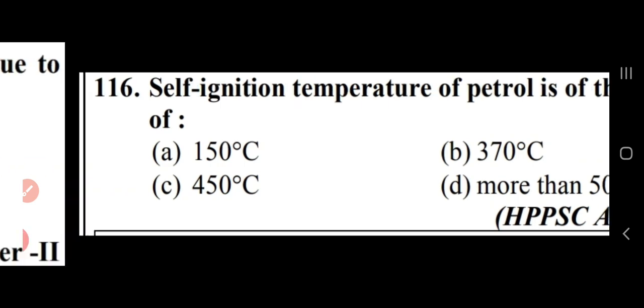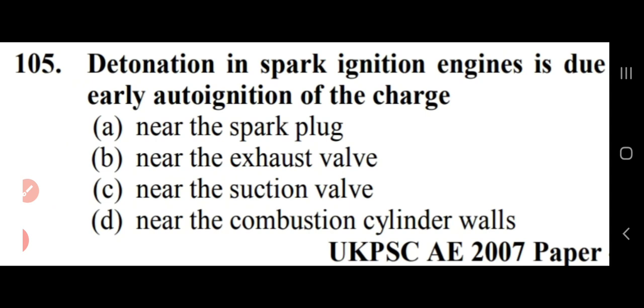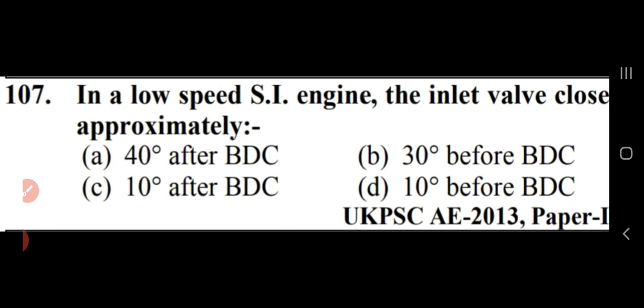Detonation in a spark ignition engine is due to early auto-ignition of charge near the combustion cylinder wall — option D. In a low speed SI engine, the inlet valve closes approximately 10 degrees after BTC — option C.